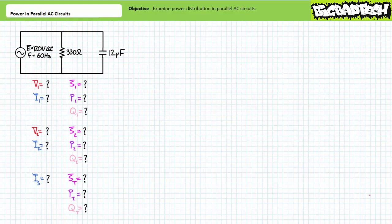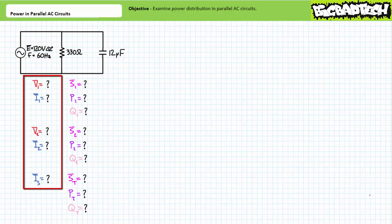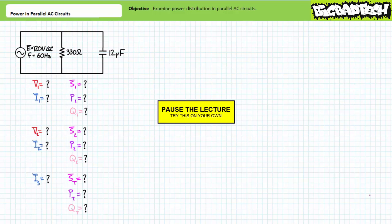Our first example problem features a parallel combination of two elements. The first element is a 330 ohm resistor, and the second element is a 12 microfarad capacitor. Stage one of this example problem necessitates we solve for the voltage drop across each element, the current through each element, and the source current. Once we've got these values, we'll move on to stage two and examine power distribution within this parallel circuit. By all means, pause the lecture and try stage one on your own.